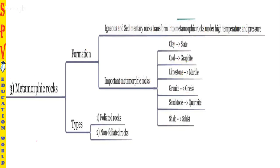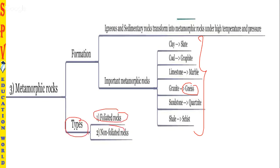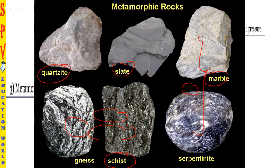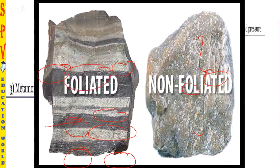Key metamorphic transformations to remember for exams: clay forms into slate, coal forms into graphite, limestone forms into marble, granite forms into gneiss, and sandstone forms into quartzite, while shale forms into schist. These questions are very common — for example, granite under high temperature and pressure forms gneiss. Metamorphic rocks are of two types: foliated rocks, which have sheet-like layered arrangements, and non-foliated rocks, which do not have such divisions. Examples include quartz, slate, marble, serpentine, schist, and gneiss.